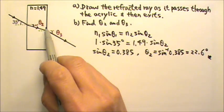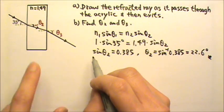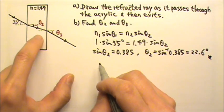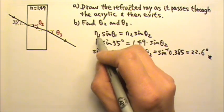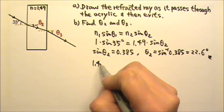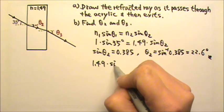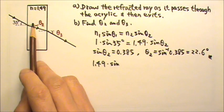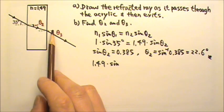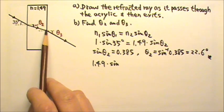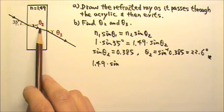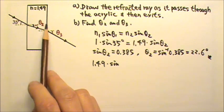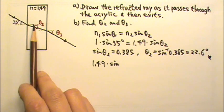And then we look at the second refraction. For the second refraction, light goes from acrylic to air, so n1 is the n for acrylic. The angle here, because these two normal lines are parallel to each other, here we have a Z shape. That means these two angles are the same. So the angle of incidence for the second refraction is the same as theta 2.